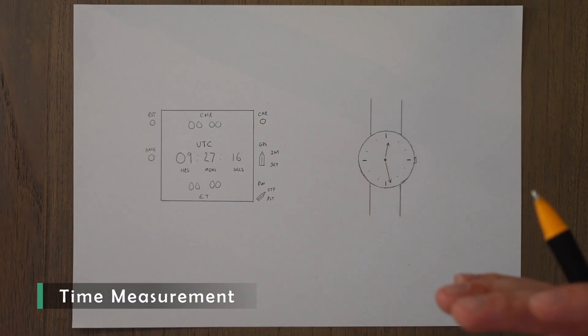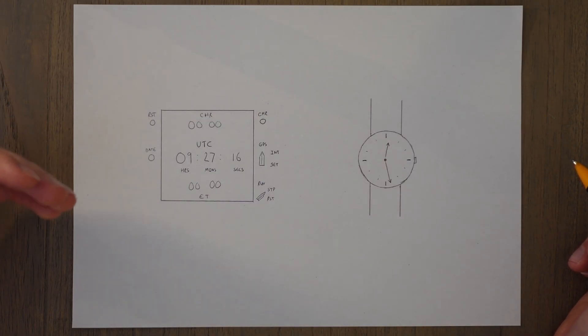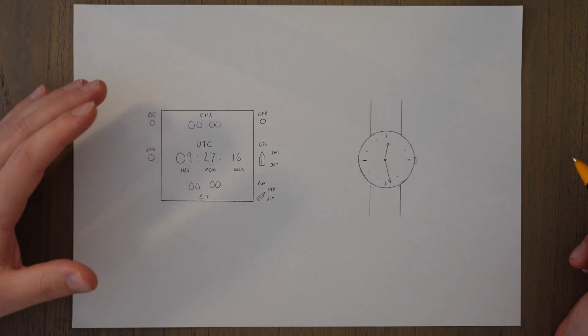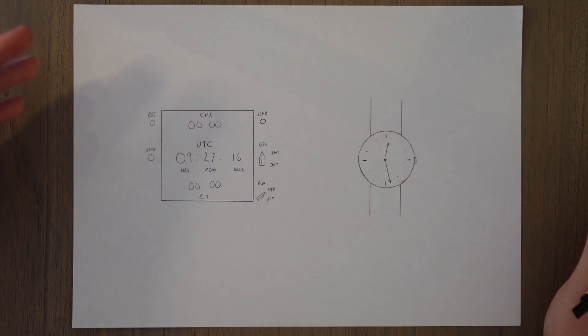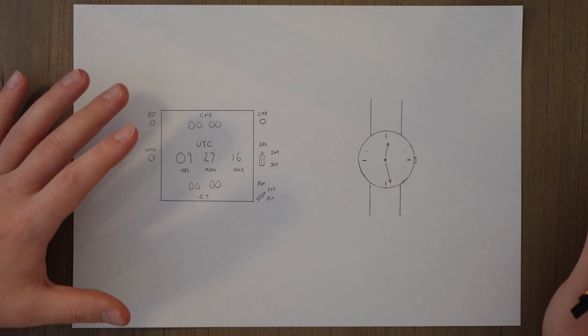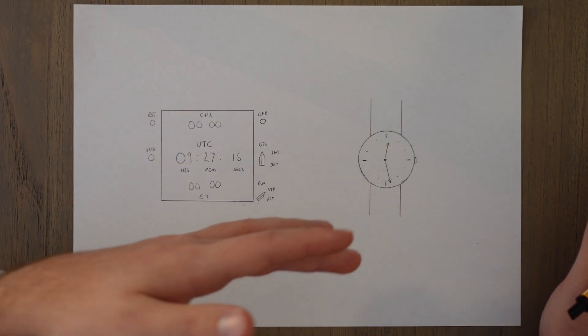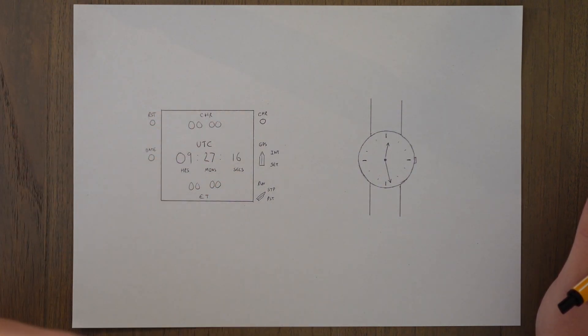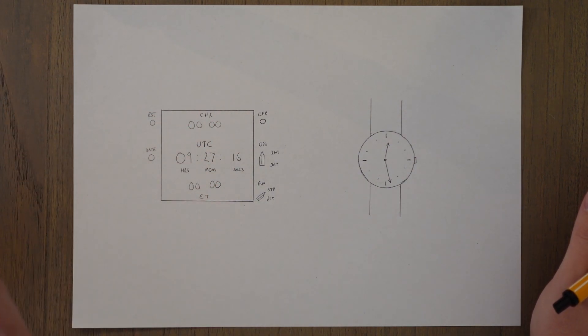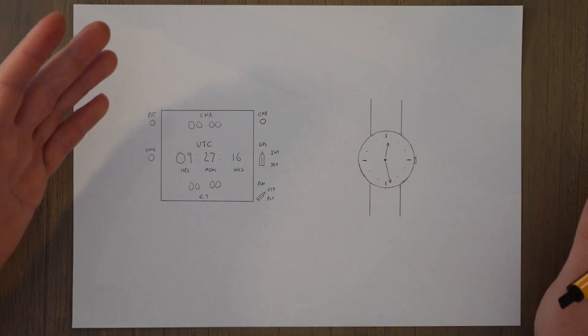In aviation, we measure things in UTC, universal time coordinate, which is a standardized time zone throughout the world. In the UK and parts of Europe, it is the same as the time in London, GMT, without daylight savings applied. And in other parts, it might be a few hours different from local, or even vastly different in places like New Zealand, where UTC is 12 hours different from local time.